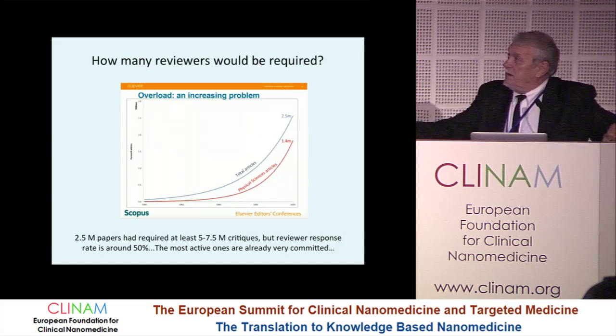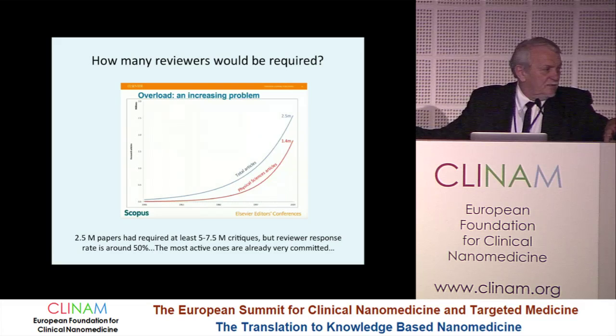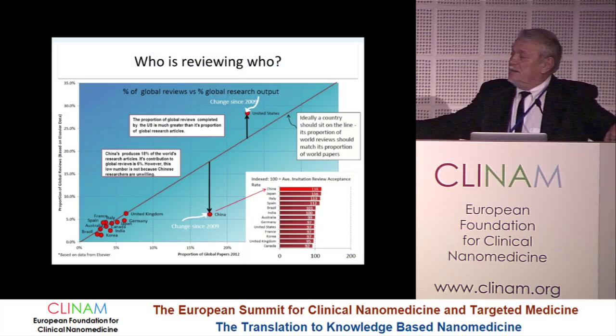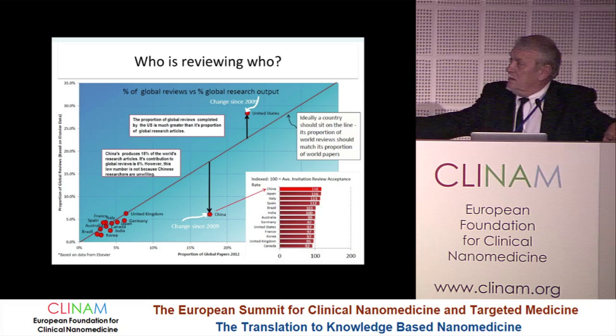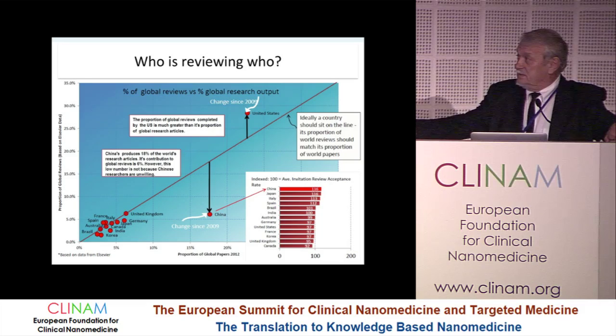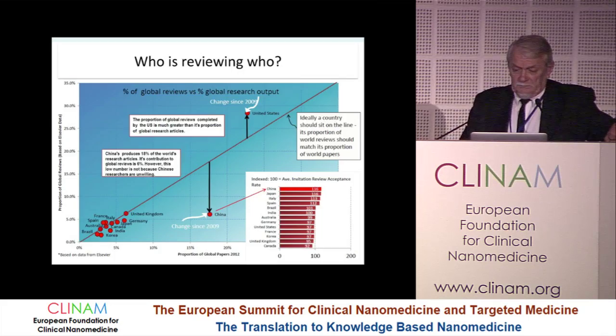How many reviewers would be required? About 2.5 million papers required at least five to 7.5 million critiques, depending on whether two or three reviews per paper are accepted. But the review response rate is about 50% — everybody has a life, travels, and writes. The best ones who are the most expert have already been asked and taken. Looking at the data, far fewer reviewers are coming from China even where they have the highest acceptance rate, while many more reviewers are invited in the United States.